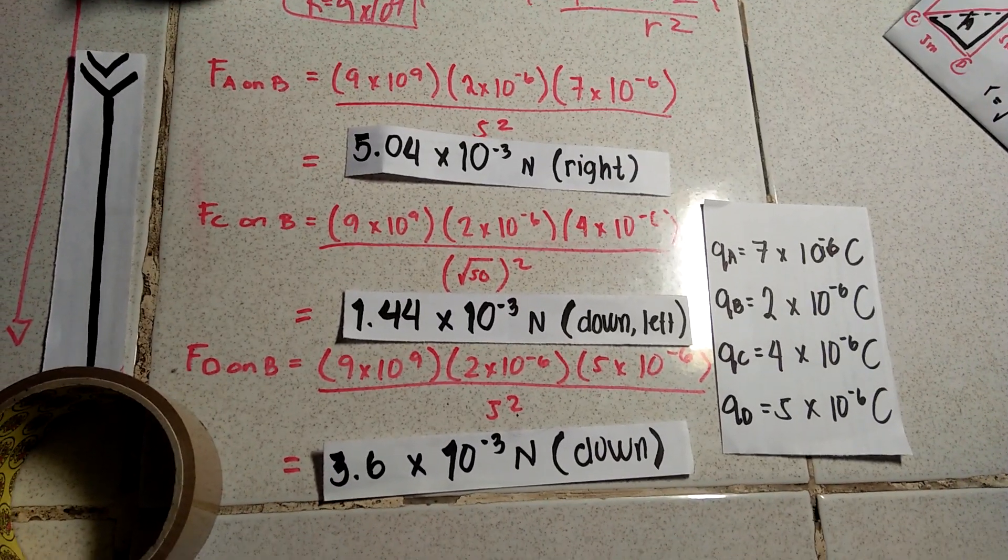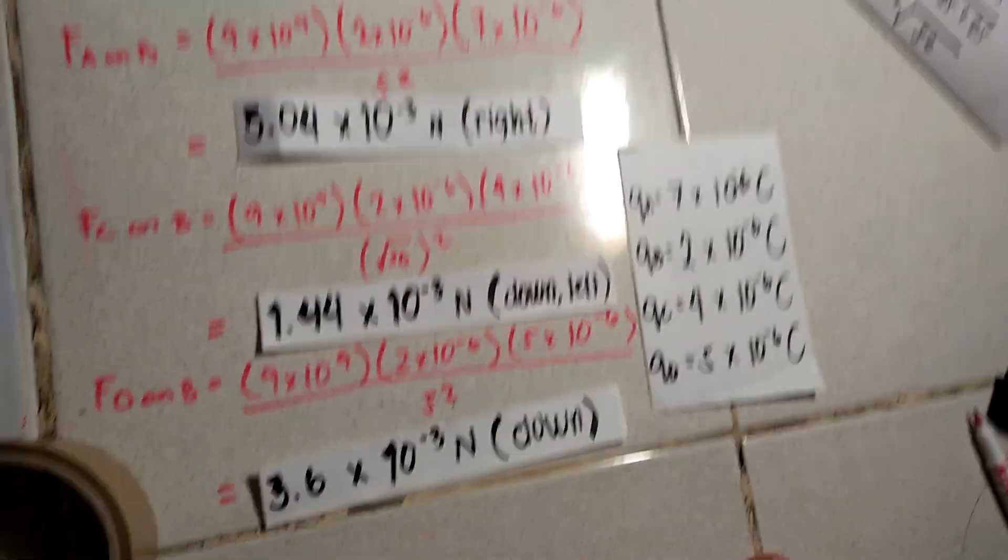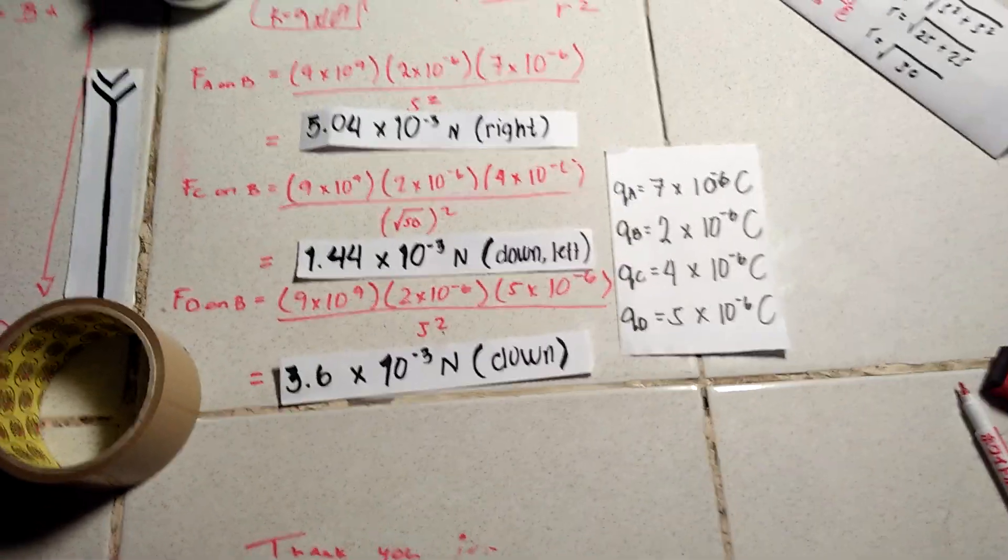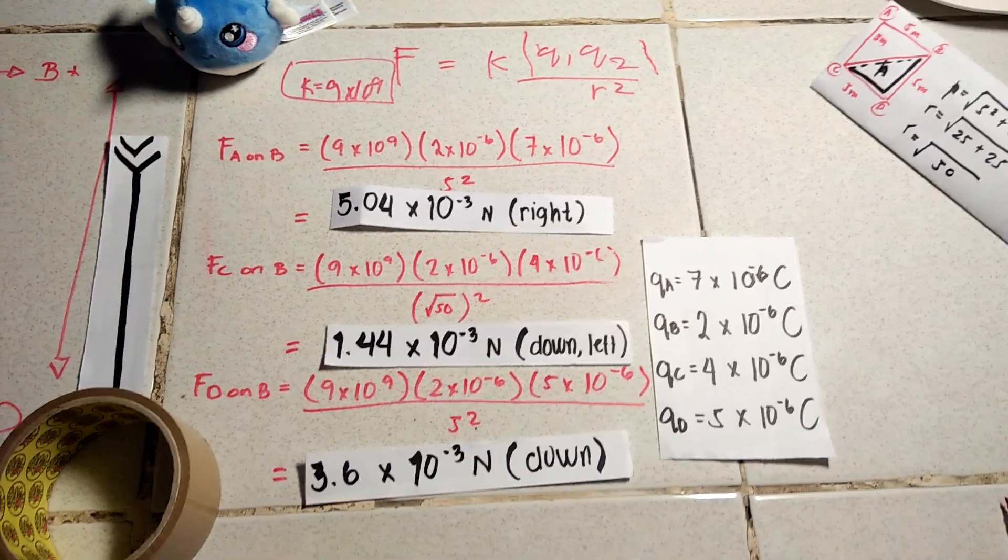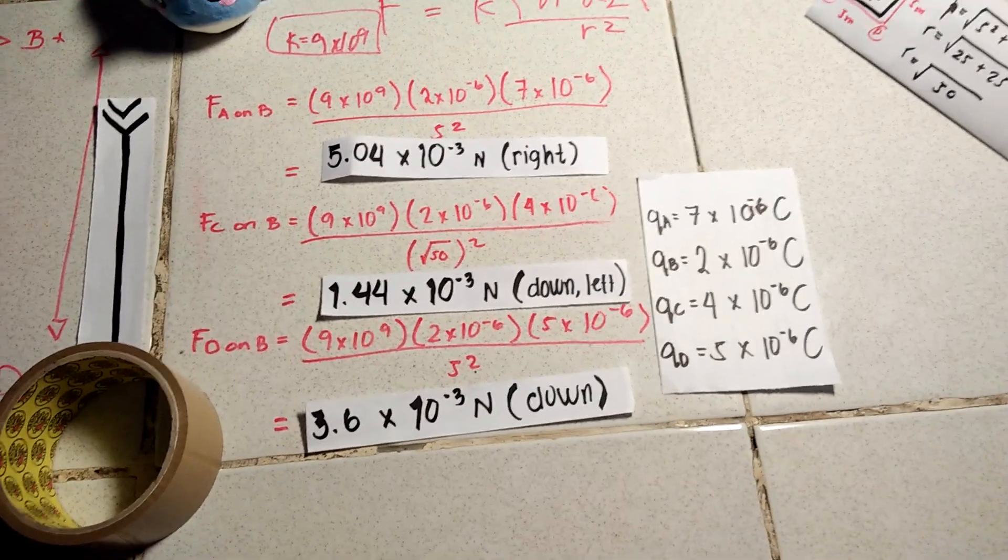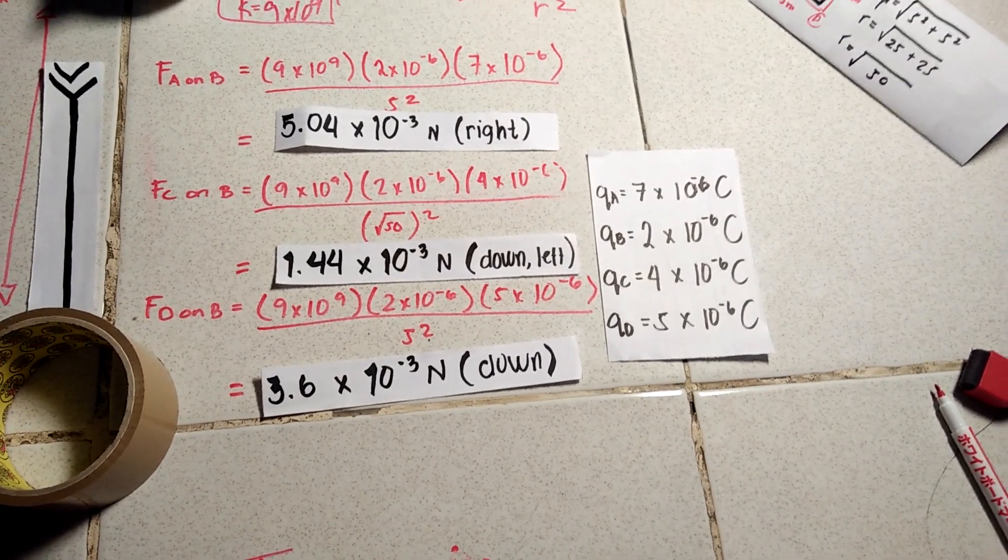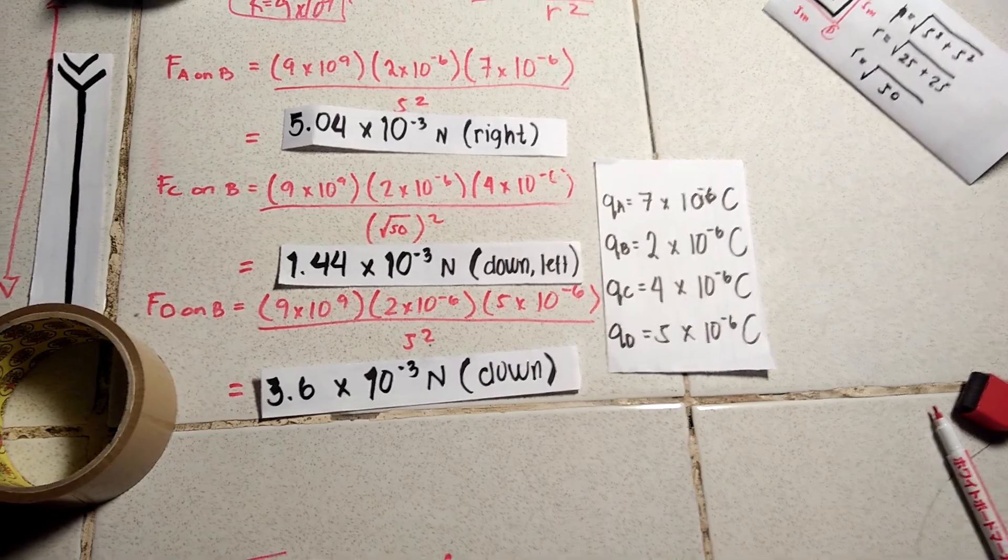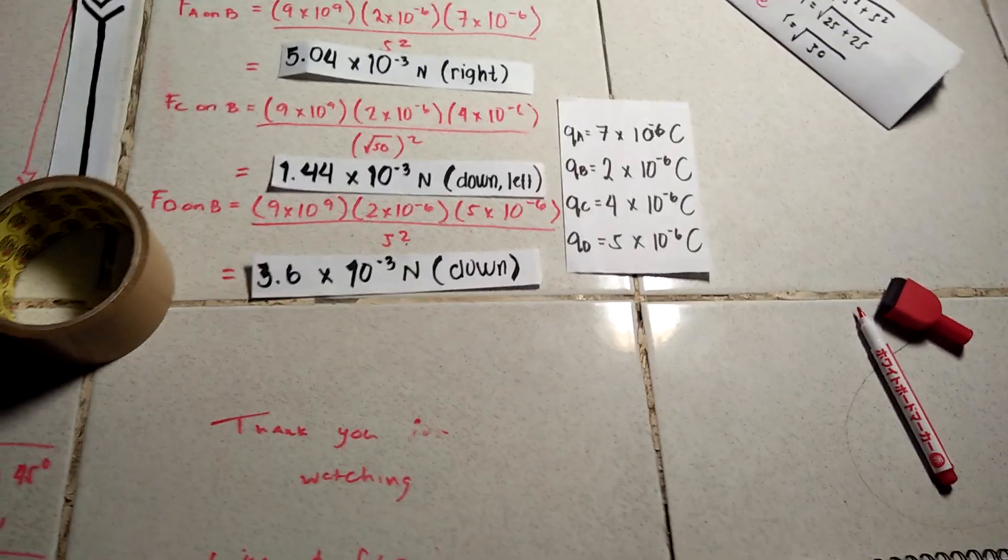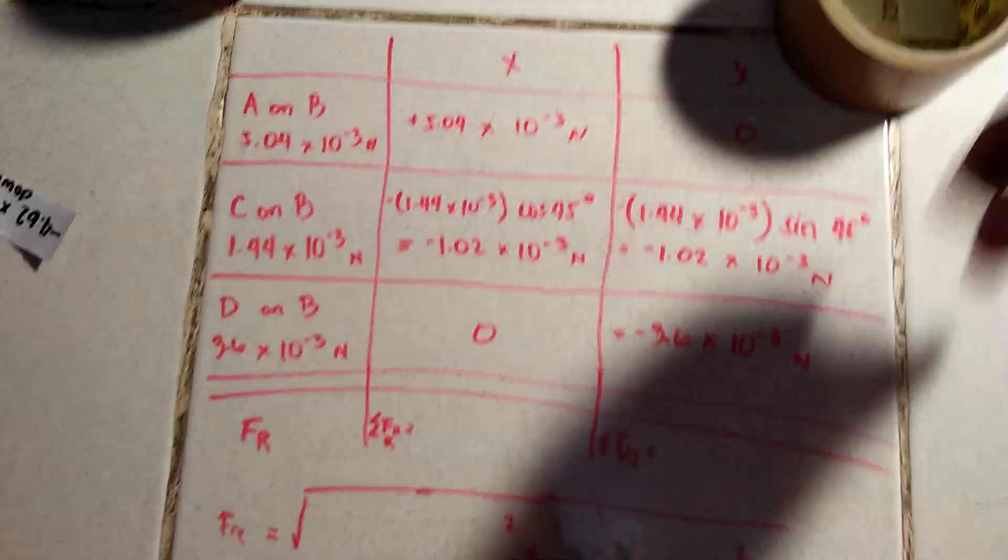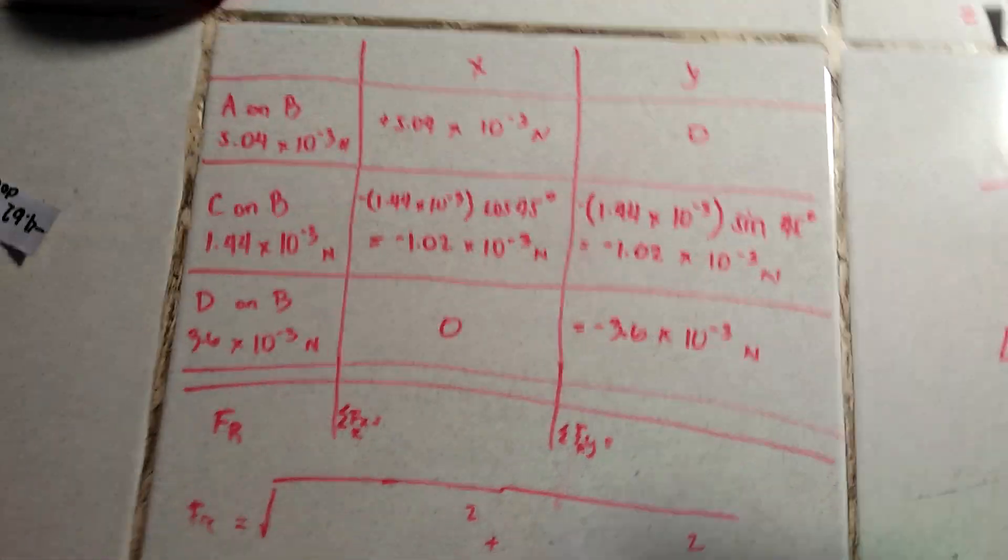So once we have all those forces, or electrical forces, we can now put it on a table. Because in order to find the resultant force, we have to add up all the x and y forces, or the x and y components. Because the resultant force could be diagonal. So if it's a diagonal, then it has to have x and y components. So let's move on to the table.